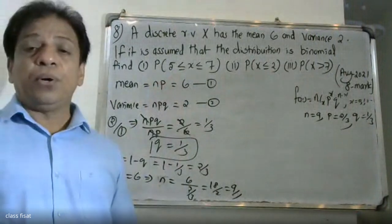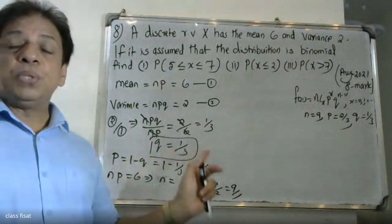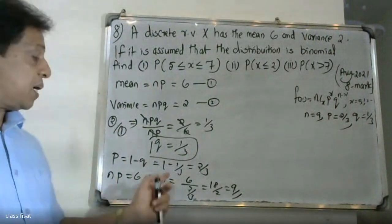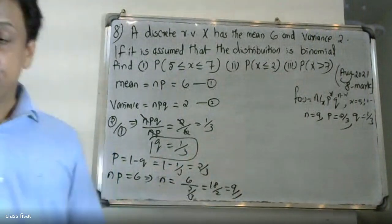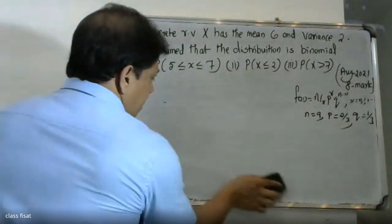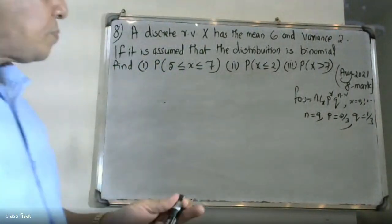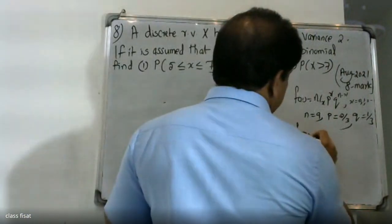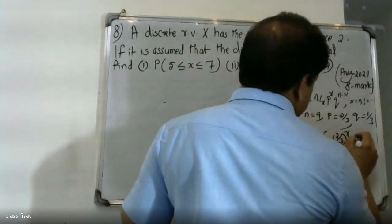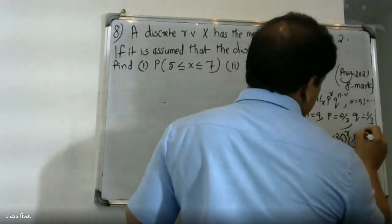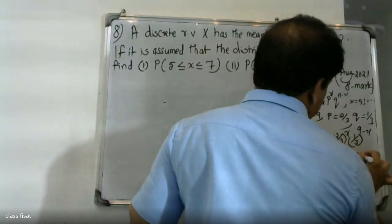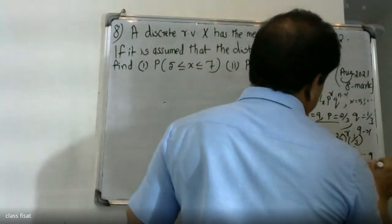Using these values, the binomial distribution function is: f(x) = 9Cx times (2/3) raised to x times (1/3) raised to (9 minus x), where x = 0, 1, 2, ..., 9. This is our binomial distribution function.